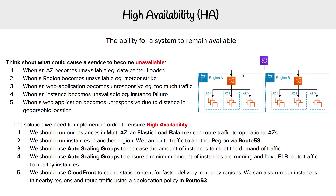What happens when you have a web application that becomes unresponsive because of too much traffic? If you're having too much traffic coming to your platform, you're probably going to need more EC2 instances to handle the demand. That's where we use auto scaling groups, which have the ability to scale based on the amount of traffic coming in.